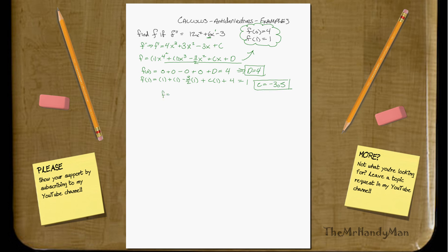So now, our whole function is just going to equal x⁴ + x³ - 3/2 x² - 3.5x + 4. Excellent.